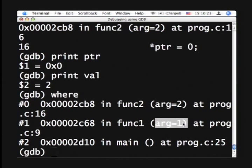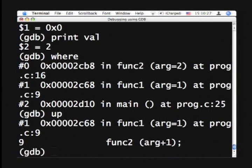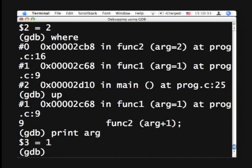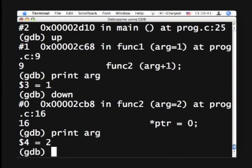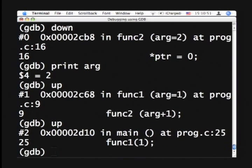In case we didn't have that, we can say up. So we can go up and then we can say print arg and tell you what the value of arg was in the calling function. If we go down, we go back to the func2 where we can say print arg, and arg is different because of, you know, now we are in func1 or func2. So we can go up and look at variables which are local to the particular function.